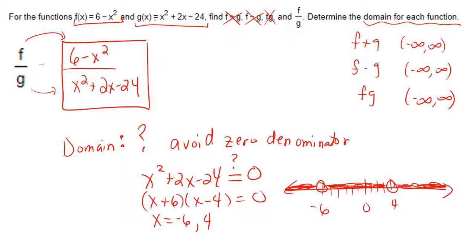So that domain would be negative infinity, comma, negative 6, union, negative 6, comma, 4, union, 4, comma, infinity.